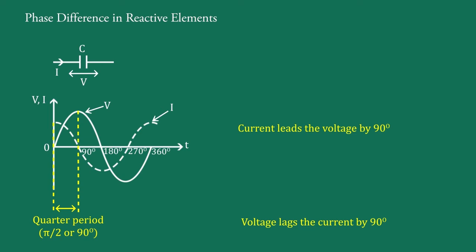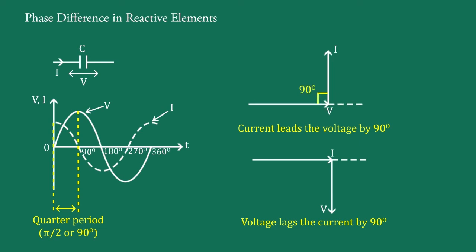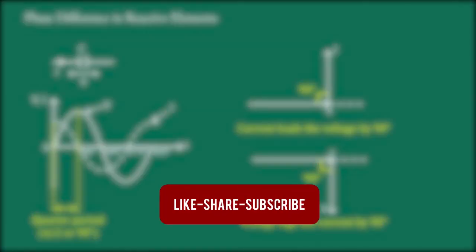Therefore, the phasor diagram for the voltage and current through the capacitance is of this type — here current leads the voltage by 90 degrees, and here voltage lags behind the current by 90 degrees. That's all. In the next video, we will learn about various parameters of the RL series circuit.